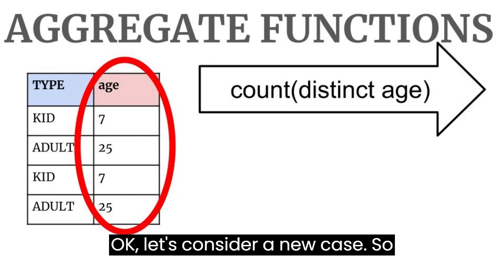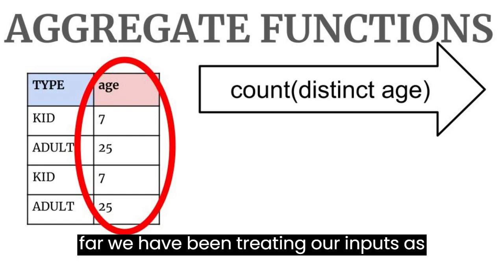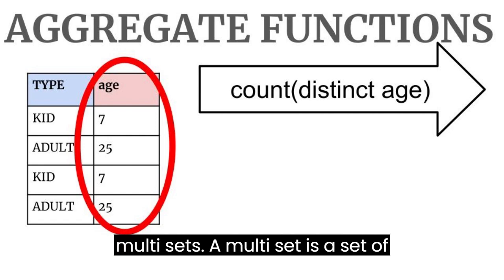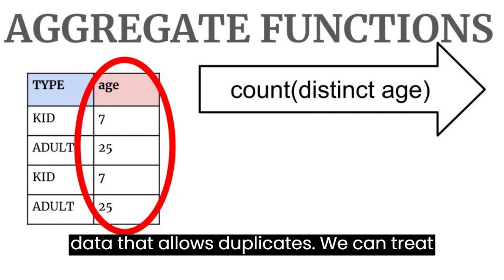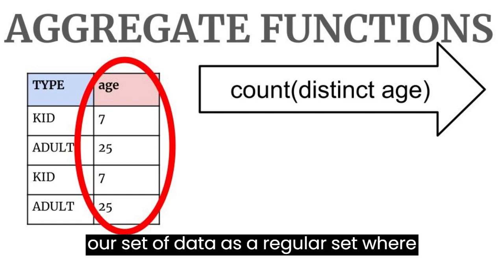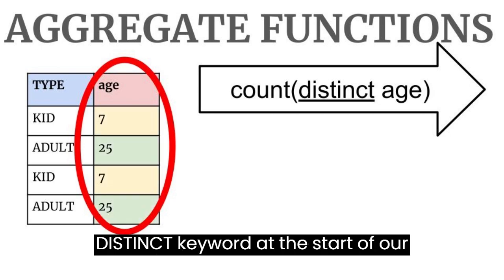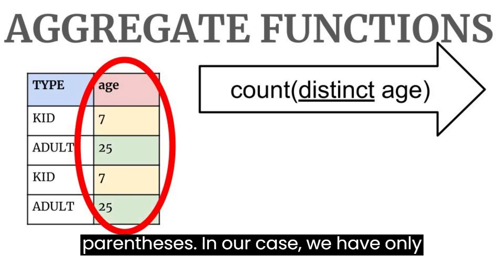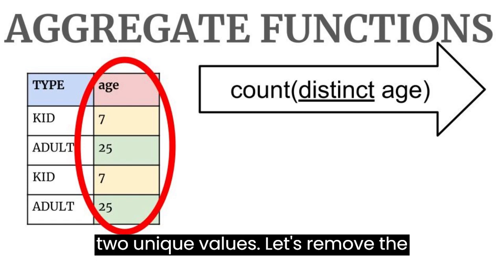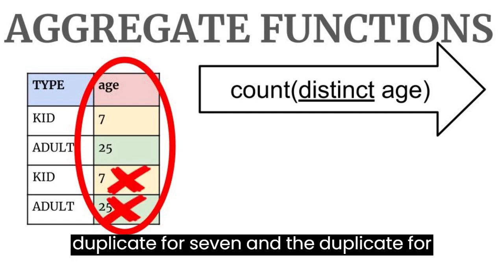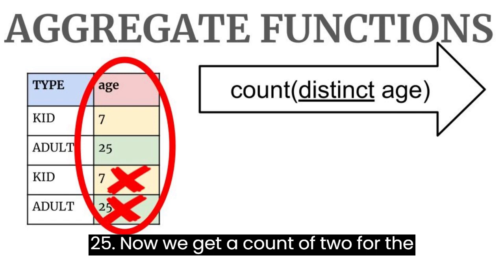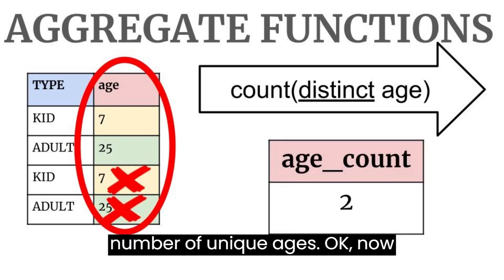Okay, let's consider a new case. So far, we have been treating our inputs as multi-sets. A multi-set is a set of data that allows duplicates. We can treat our set of data as a regular set, where duplicates are ignored, by putting the distinct keyword at the start of our parentheses. In our case, we have only two unique values. Let's remove the duplicate for 7 and the duplicate for 25. Now we get a count of 2 for the number of unique ages.